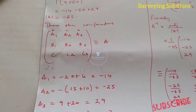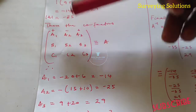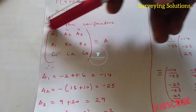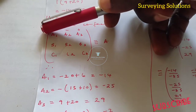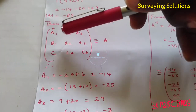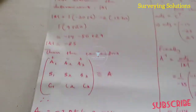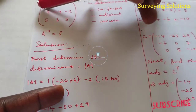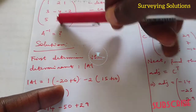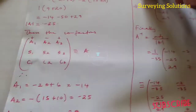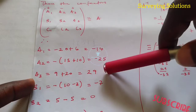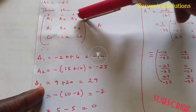For cofactor a3, you exclude this particular column and still exclude the first row, so we are only considering b1, c2 and b2, c1. b1 times c2 gives us 9 plus 20, which is 29. So these are the cofactors on our first row.